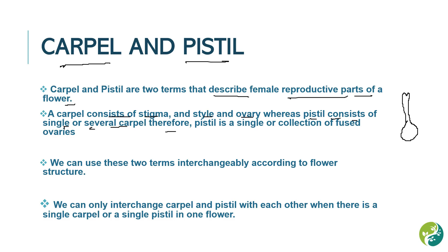Whereas a pistil consists of a single or several carpels. That means a carpel is a unit of a pistil. Therefore, a pistil is a single or collection of fused ovaries, and hence we can say that the pistil is the seed-bearing part of a flower.